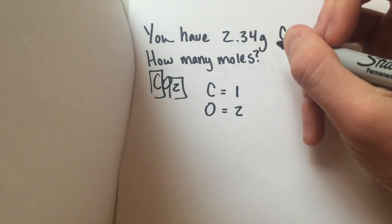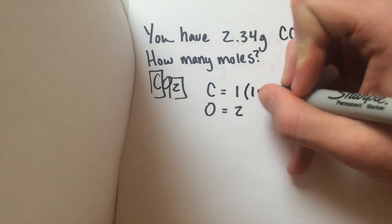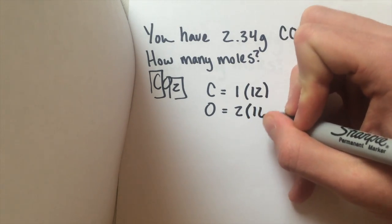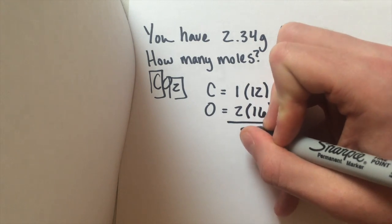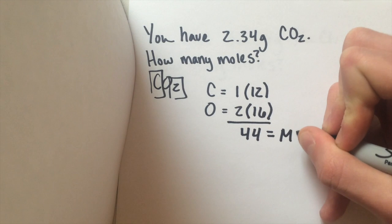If you look on your periodic table, carbon weighs 12. Oxygen weighs 16. And if you add that up, you get a molecular weight of 44 grams for carbon.